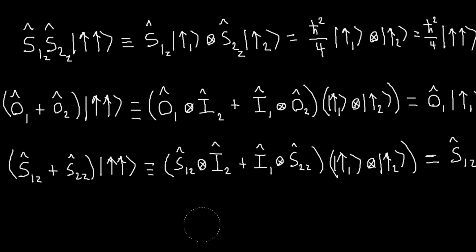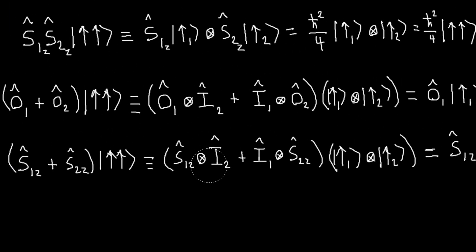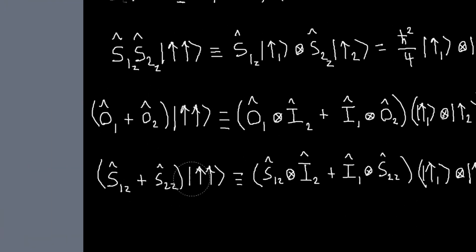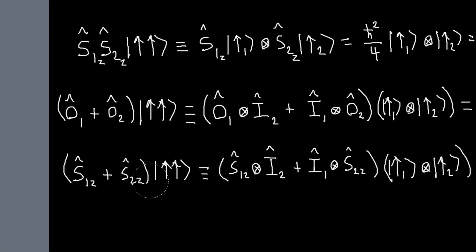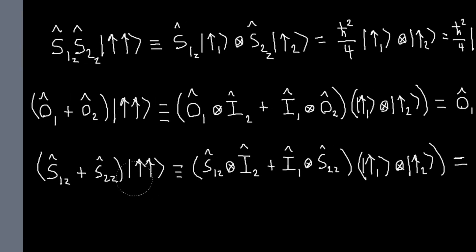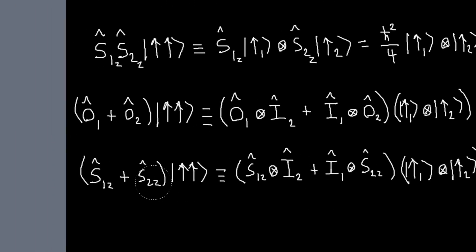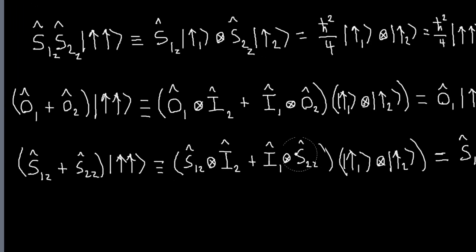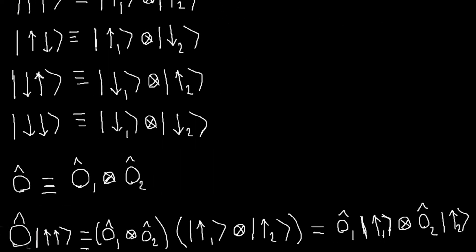That begs the question: why am I bothering writing all this out if you never actually have to work with it? You can just work with the simpler notation with an understanding that what you really mean is the full Kronecker product expression. The reason is that while most of the time we don't need to worry about the Kronecker product, there will be times where it's important to know what's happening under the hood — and we'll see examples of that in the next video.